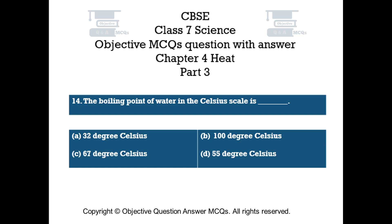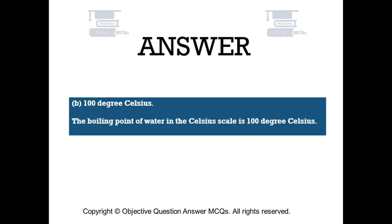Question number 14. The boiling point of water in the Celsius scale is: Option A 32 degree Celsius, Option B 100 degree Celsius, Option C 67 degree Celsius, Option D 55 degree Celsius. The right answer is Option B — 100 degree Celsius. The boiling point of water in the Celsius scale is 100 degree Celsius.